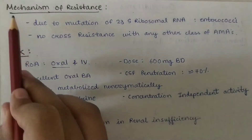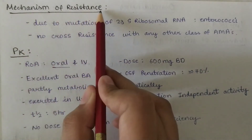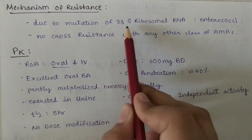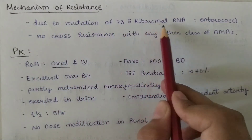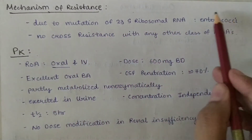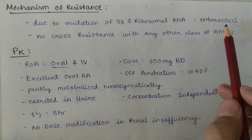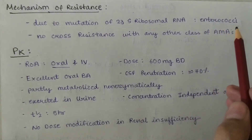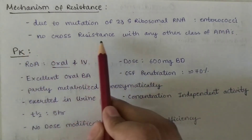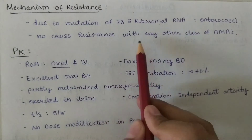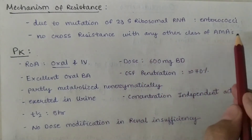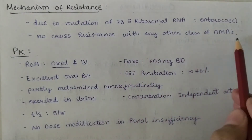Mechanism of resistance: due to mutation of the 23S ribosomal RNA, enterococci develop resistance against linezolid. There is no cross-resistance seen with any other class of antimicrobial agents.